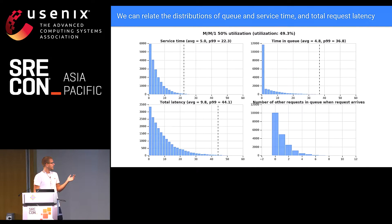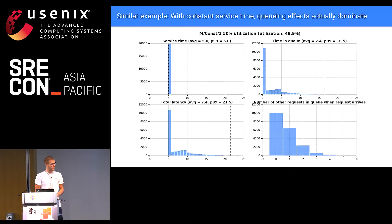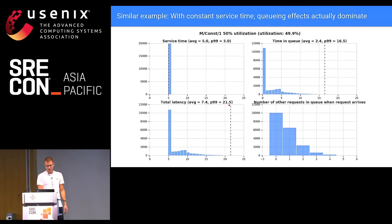You might say: I don't believe my server's service time looks like this — I crafted an algorithm that always has constant service time, exactly five milliseconds every request. So here's the same graph but with a different service time: on average five milliseconds, and at the tail also five milliseconds — that's good. But we still have a queue. And we see that this time the total latency suddenly develops a tail, because sometimes you'll find items in the queue and have to wait until they complete. Even though the algorithm you crafted is super good, because there's a queue in front of it, you end up with a tail latency of 21.5 milliseconds.